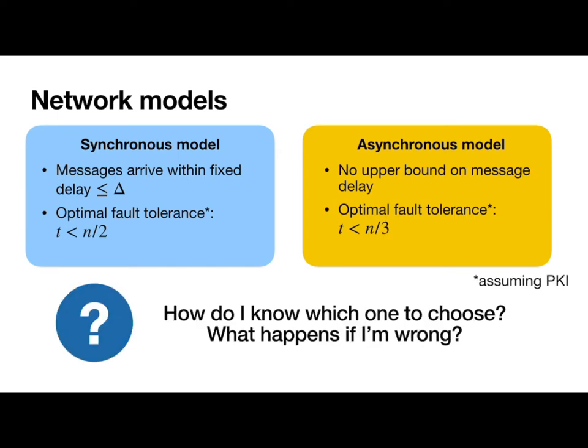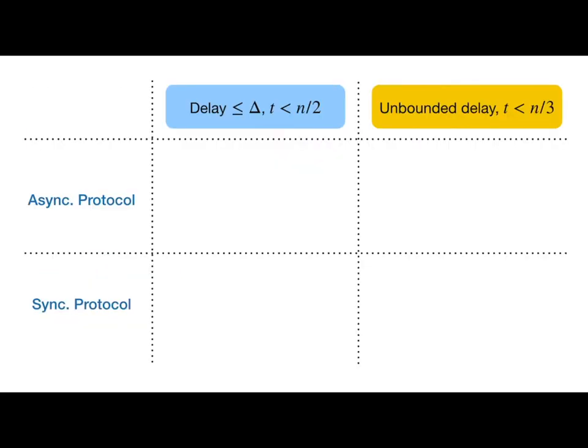If we take a protocol that is secure in an asynchronous network and stick it in a synchronous network, it will be perfectly happy as long as there are fewer than N over 3 faults. But if we had guessed correctly and just used a synchronous protocol, we would have been secure up to N over 2 faults.